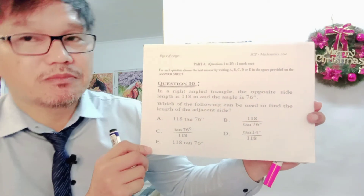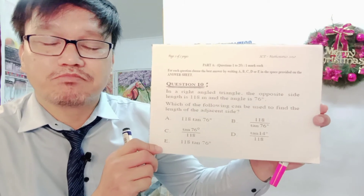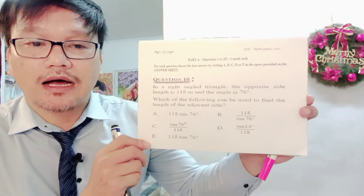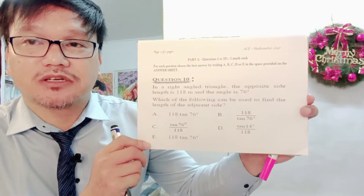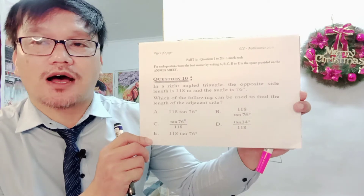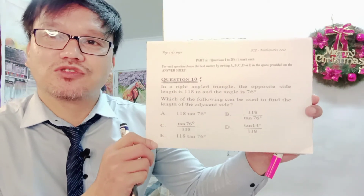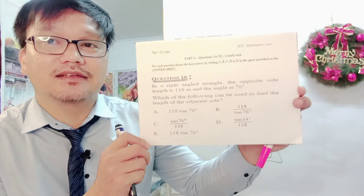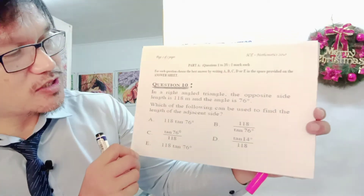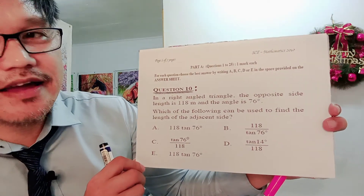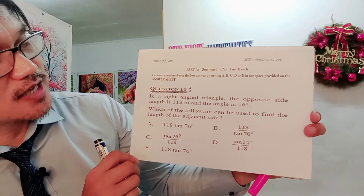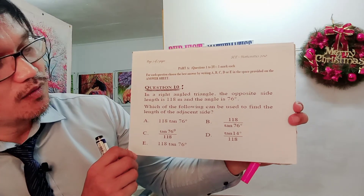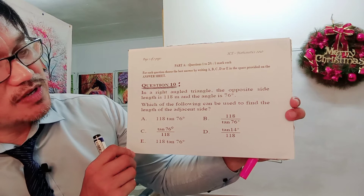Because you are in grade 10, most of the trigonometry questions in your exam are on trigonometric ratios with the use of Pythagoras theorem. Question number 10: in the right-angled triangle, the opposite side length is 118 meters and the angle is 76 degrees. Which of the following can be used to find the length of the adjacent side?